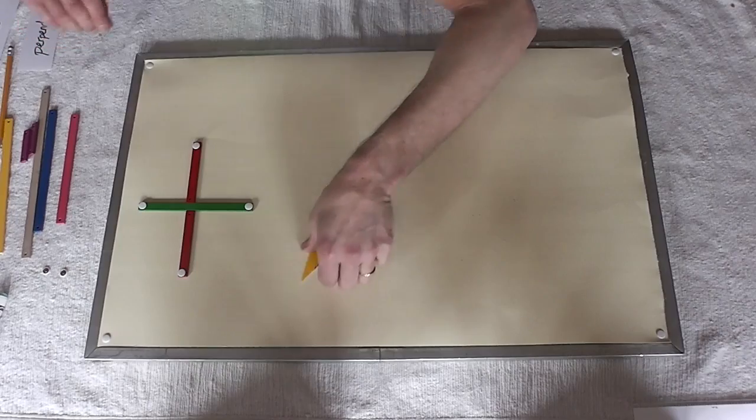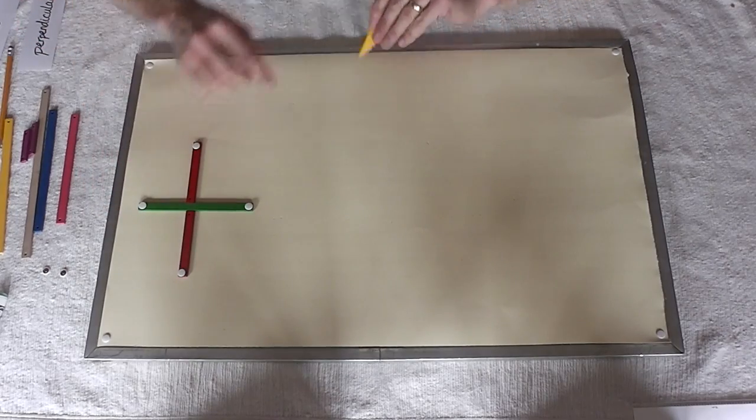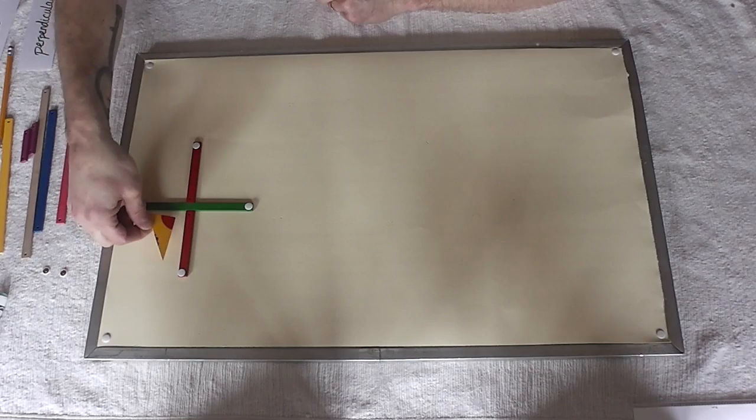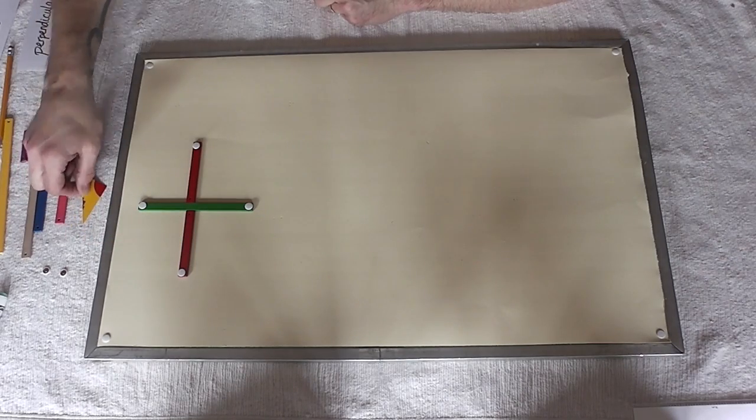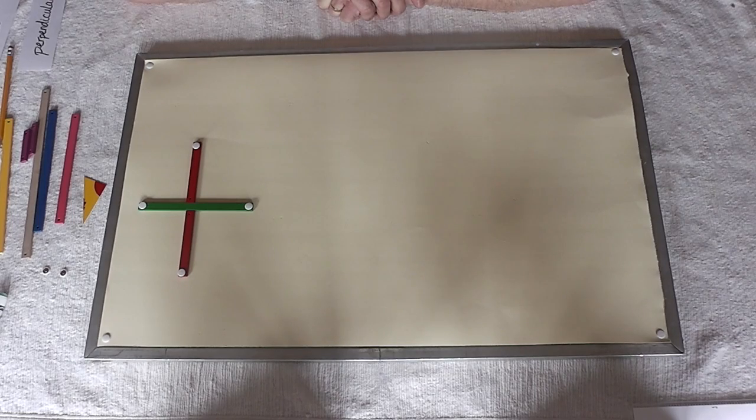So we've got one, two, three, four right angles. I have two straight lines intersecting and forming four right angles.